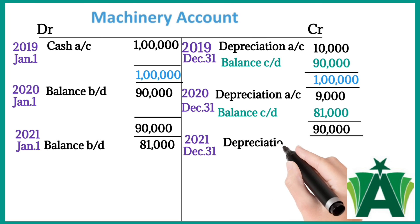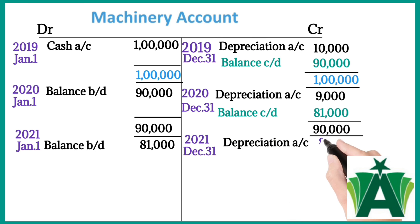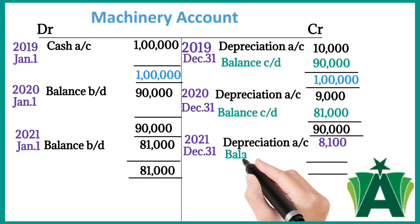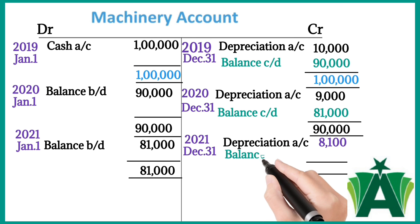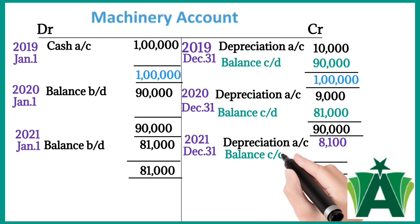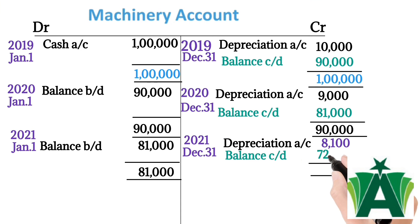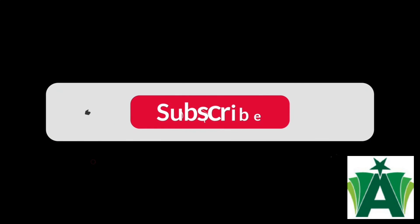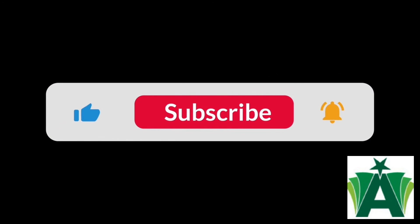For 2021, December 31st, the machinery account is credited with reference to the depreciation account for 8,100. The closing balance of the machinery account is 72,900.